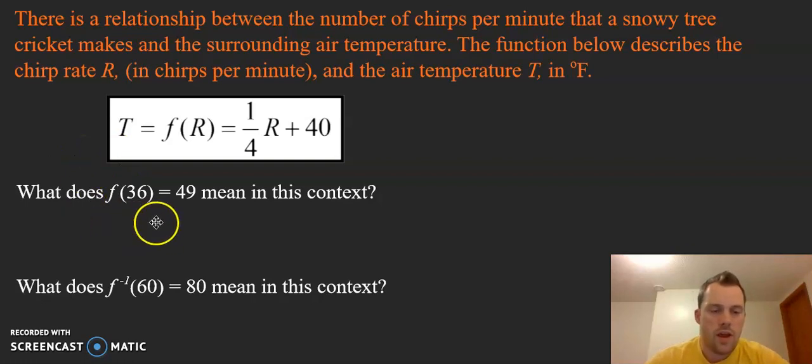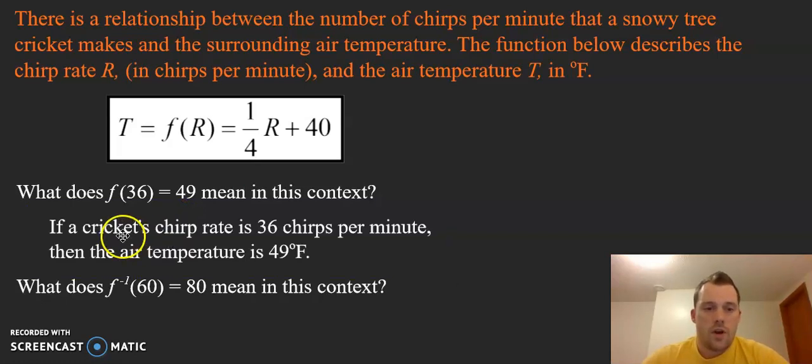If we think about f(36) = 49, what does that mean in this context? Well, 36 is the R value so that would be our chirp rate, and 49 would be the T value which is our temperature. So if a cricket's chirp rate is 36 chirps per minute, then the air temperature is 49 degrees.